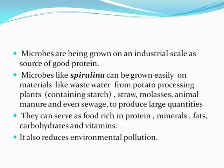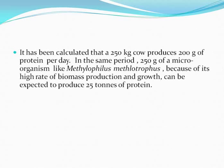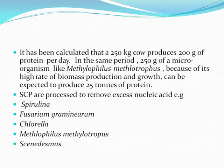It has been calculated that a 250 kg cow produces 200 grams of protein per day. In the same period, 250 grams of a microorganism like Methylophilus methylotrophus, because of its high rate of biomass production and growth, can be expected to produce 25 tons of protein. Single cell proteins are processed to remove excess nucleic acids. Examples include Spirulina, Fusarium graminearum, Chlorella, Methylophilus methylotrophus, and Scenedesmus.